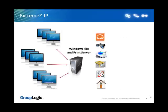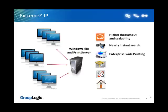XtremeZIP is an AFP-based file and print server for use on Windows servers, designed from the ground up for Mac compatibility, allowing organizations to seamlessly integrate Macs into their Windows environment. In addition to offering essential Mac file sharing and printing capability, XtremeZIP also provides higher throughput and scalability, nearly instantaneous file searching, enterprise-wide printer discovery, and support for critical Windows technologies such as Active Directory and Single Sign-On, Distributed File System, and Network Home Directories.